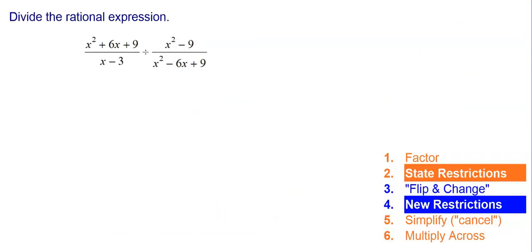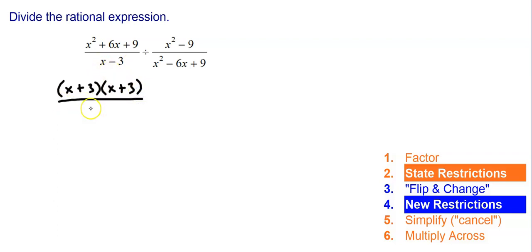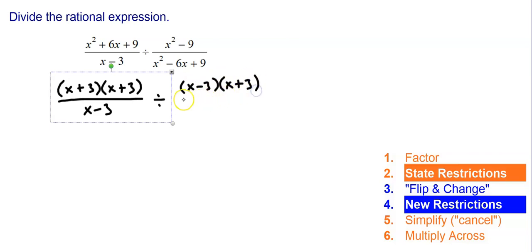Let's look at one last one. The very first step is factor everything. So x squared plus 6x plus 9 is a trinomial — using product and sum, you get x plus 3 times x plus 3. Then x minus 3 can't be factored. x squared minus 9 is the difference of perfect squares, factoring to x minus 3 times x plus 3. And x squared minus 6x plus 9 is a trinomial that factors to x minus 3 times x minus 3.